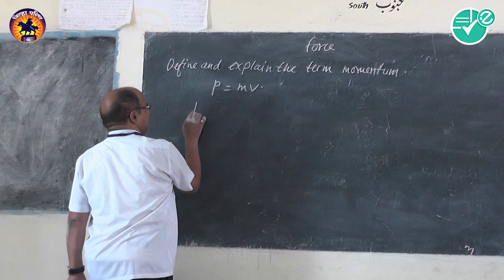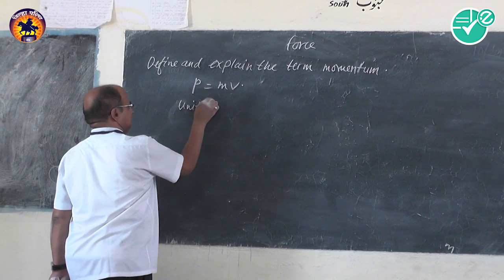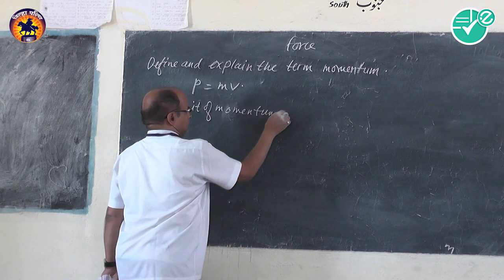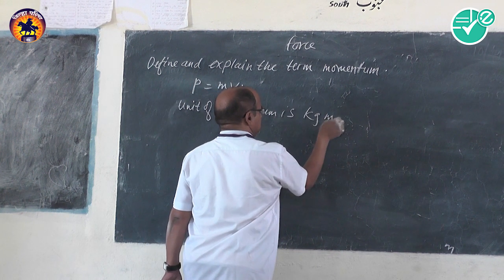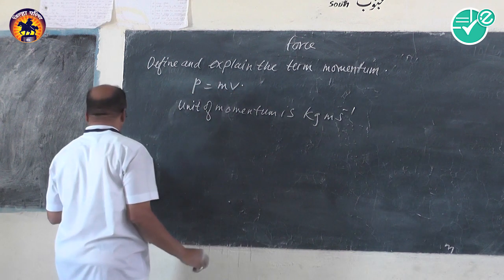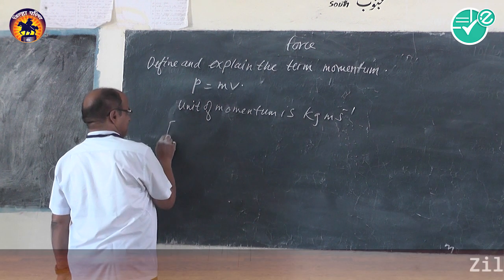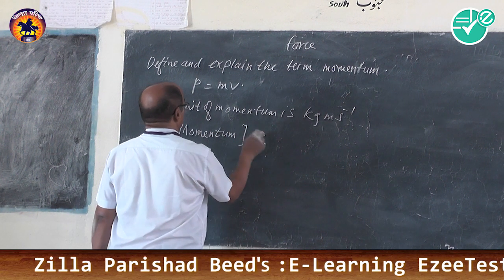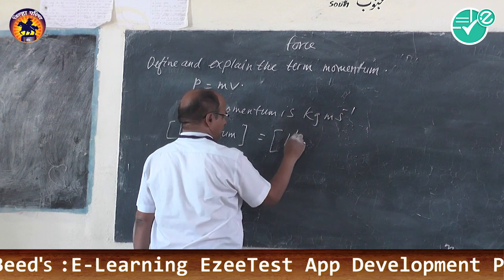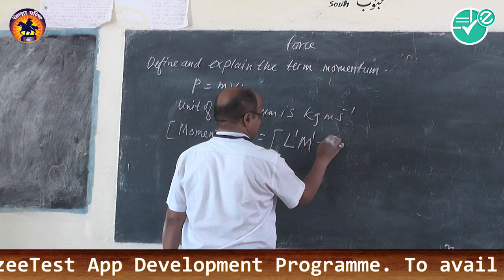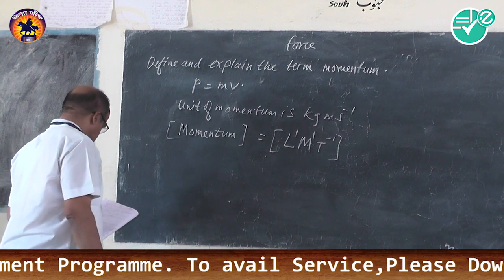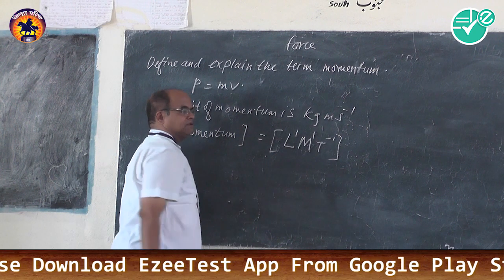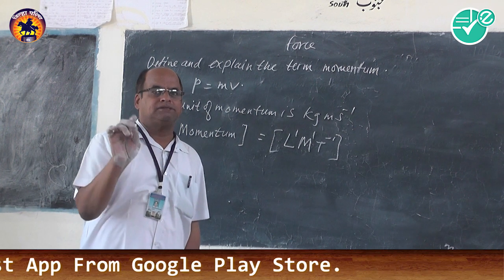The dimensions of momentum are mass into velocity, that is M1 L1 T-1. So the dimensions of momentum are M1 L1 T-1.